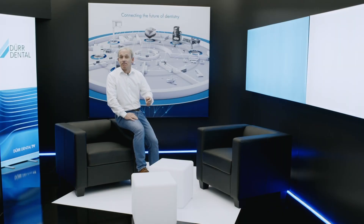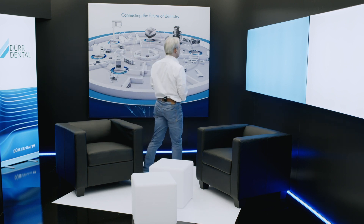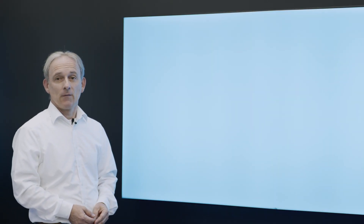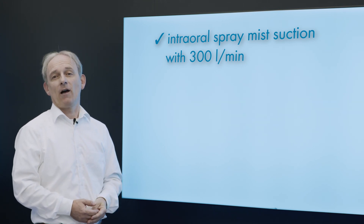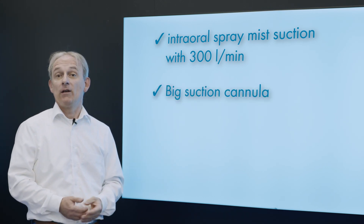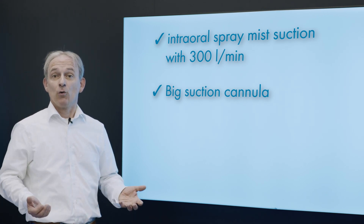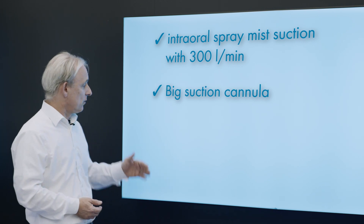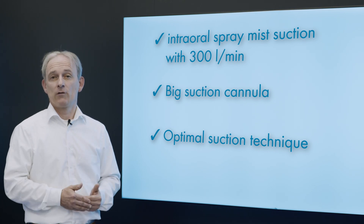Ladies and gentlemen, I have shown you how these dental aerosols are generated. I have shown you the three measures you can use to avoid these aerosols as much as possible. These are: firstly, an intraoral spray mist suction with a flow rate of at least 300 liters per minute; secondly, a large cannula with a design that can capture aerosols as well as possible; and thirdly, a suction technique with a distance from cannula to tooth that is as small as possible.